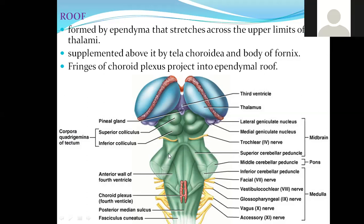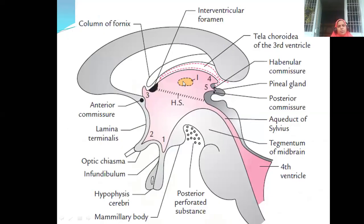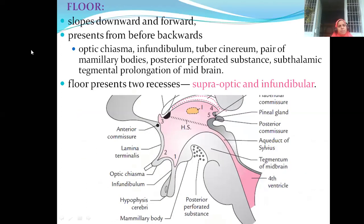What are the structures forming the roof of the fourth ventricle? Superior medullary velum — white matter fibers — and inferior medullary velum, which is only pia mater. Here in the roof, the main important structure is the tela choroidea, which has the choroid plexus. Practice this picture.